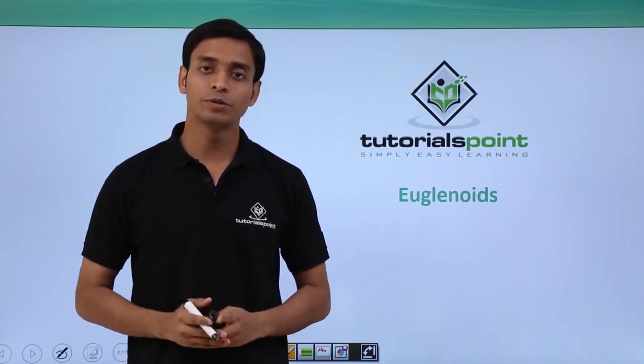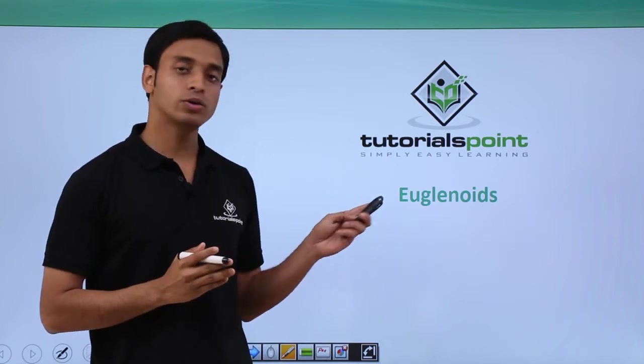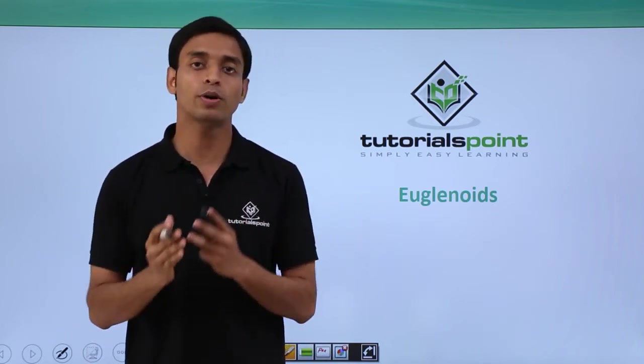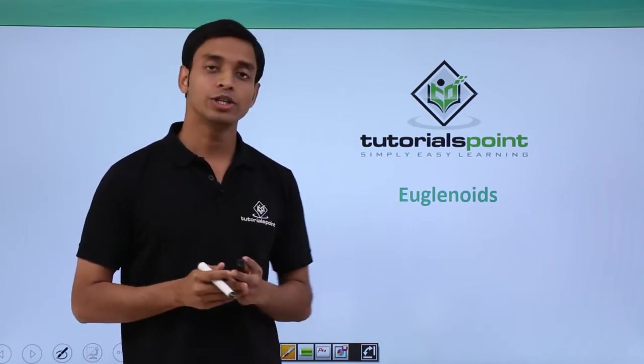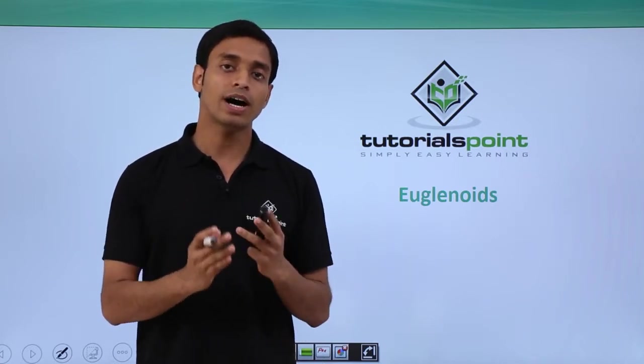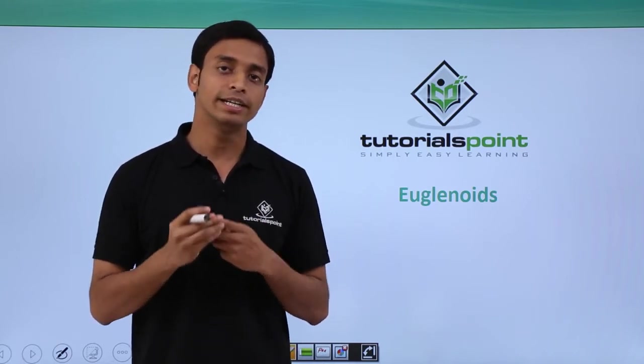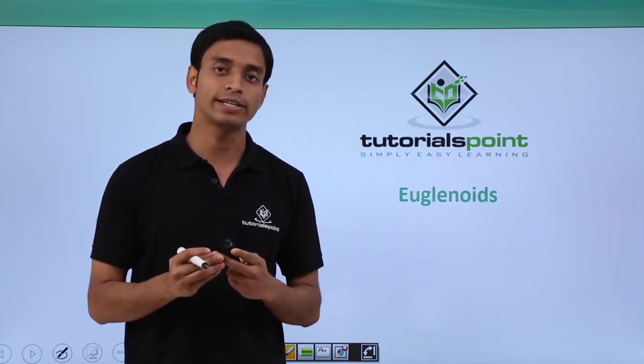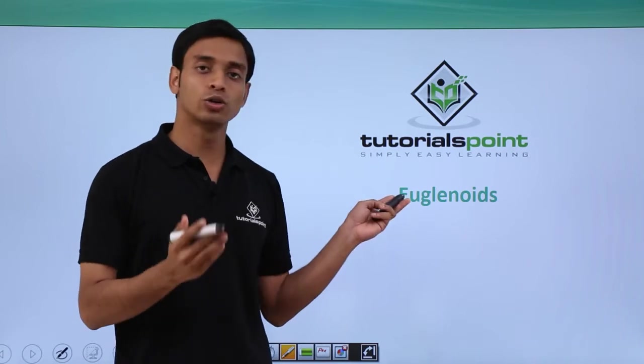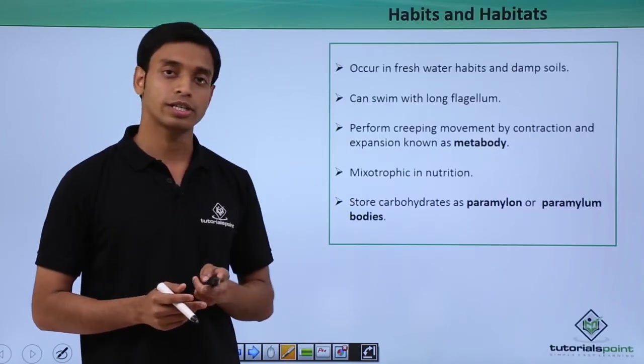Hello everyone, welcome to Tutorials Point. In this video we are going to talk about a photosynthetic group of protists which are known as euglenoids. So far we have discussed the other two groups of photosynthetic protists which are dinoflagellates and chrysophytes. Now this is the third group of photosynthetic protists known as euglenoids.